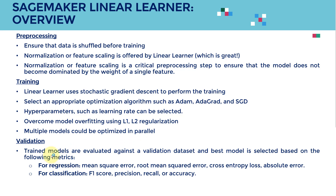Once the model is trained, it's time for validation. Trained models are validated against a validation dataset and the best model is selected. For regression, you can look at metrics such as mean squared error, root mean squared error, cross entropy loss, and absolute error. For classification, you can leverage precision, recall, F1 score, and accuracy.